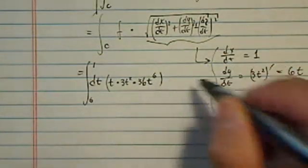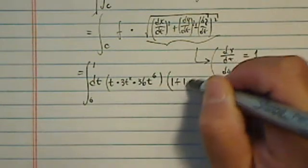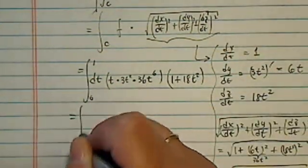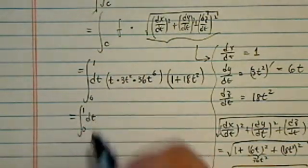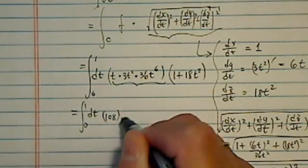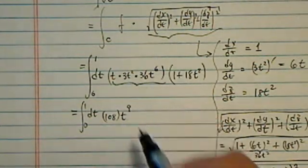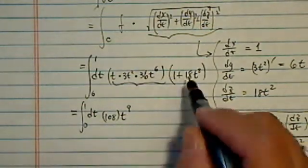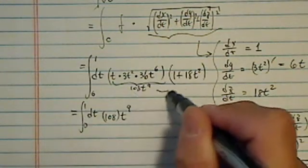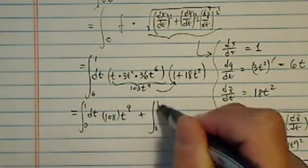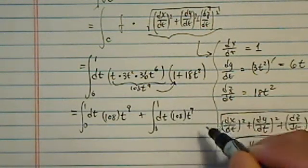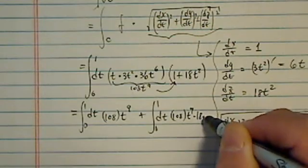All right, let's combine all that, and then this one, we have 1 plus 18t squared. Let's do one more simplification here before we split it up. This whole thing here, we have 108t to the 9th. That's the first part, it's 108t to the 9th. I'm going to multiply it to this one, 0 to 1 dt, 108t to the 9th times 18 times t squared.